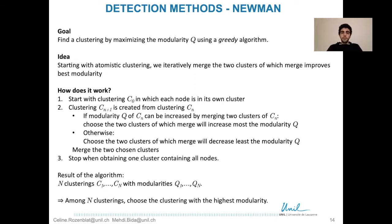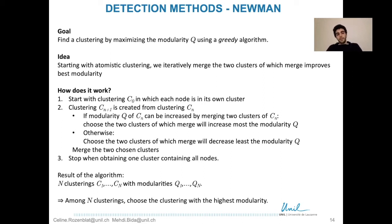Then we iteratively merge the two clusters whose merge improves best the modularity. In detail: we start with clustering C0 in which each node is in its own cluster. The iteration to go from step n to step n+1 considers clustering Cn. If the modularity of Cn can be increased by merging two clusters, we choose the pair whose merge increases modularity q the most; otherwise we choose the pair whose merge decreases modularity q the least.